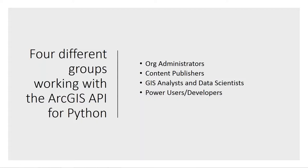There are four different personas that work with the ArcGIS API for Python: org administrators, content publishers, GIS analysts and data scientists, and power users and developers. Some folks might do a little bit across all personas. An org administrator creates groups, users, and roles. A data scientist might want to integrate mapping into their workflows using Jupyter Notebooks. It just varies on what angle you're coming from.